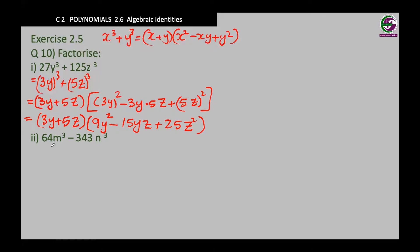Let's see the next question: 64m cubed minus 343n cubed. 64 is 8 squared, but it is also 4 cubed, and we need power 3, so we rewrite it as 4m cubed minus 7n cubed.